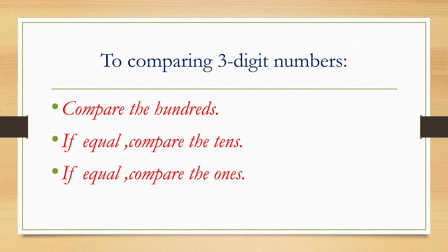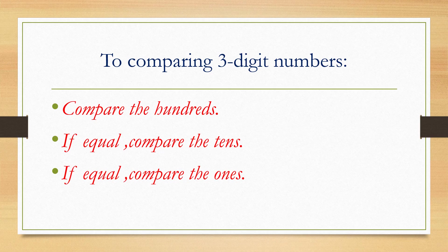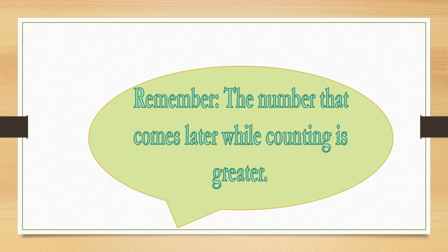To compare three digit numbers: first, compare the digits in the hundreds place. If the digits in the hundreds place are equal, compare the digits in the tens place. If the digits in the tens place are equal, compare the digits in the ones place. Remember, the number that comes later while counting is greater.